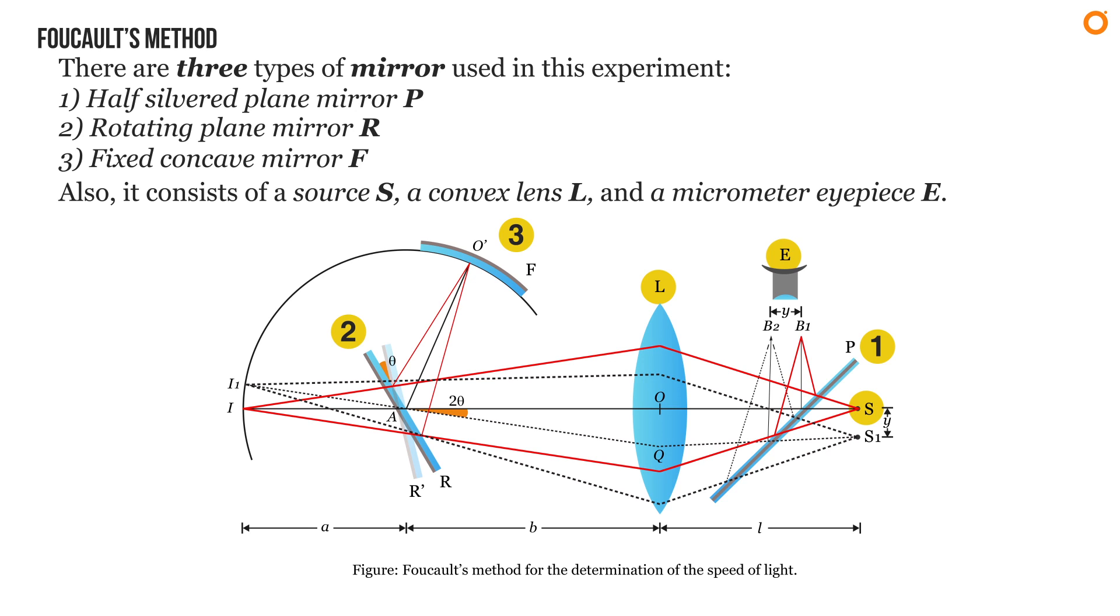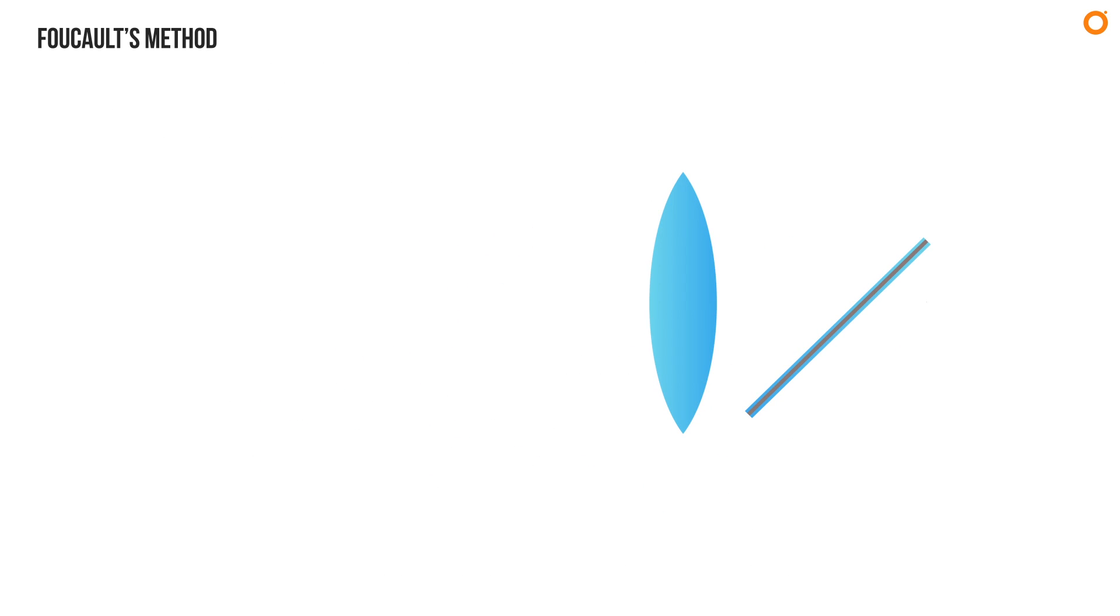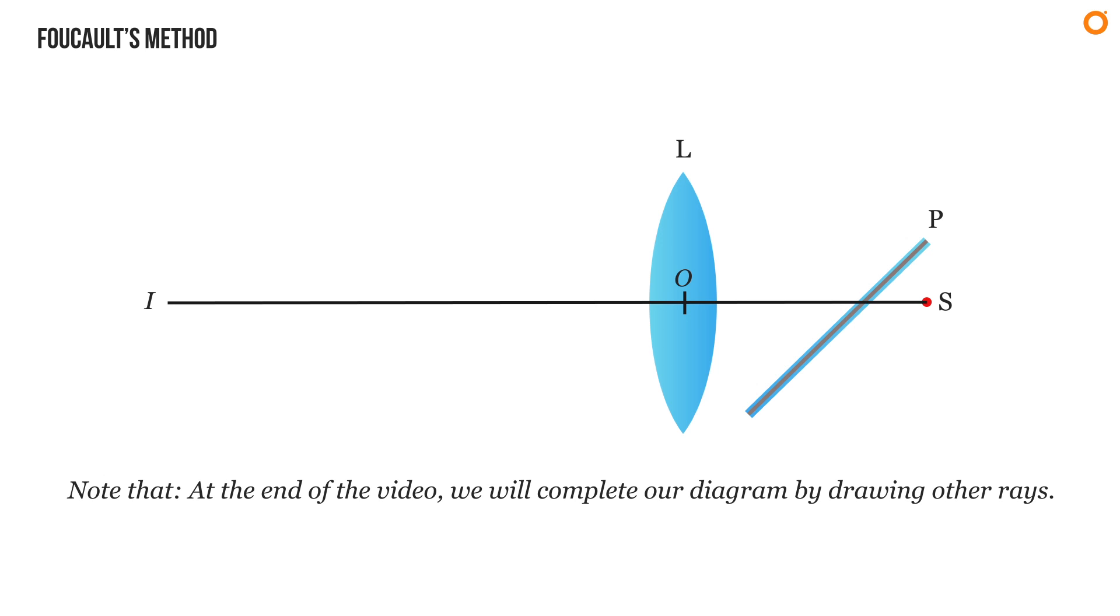In this experiment, the ray of light from source S is allowed to fall on convex lens L after passing through the half-silvered plane mirror P. Since this ray passes through the center of convex lens L, it goes undeviated and forms an image at I. I know it's a bit ridiculous to say that a ray forms an image, but believe me it will be easier to draw.